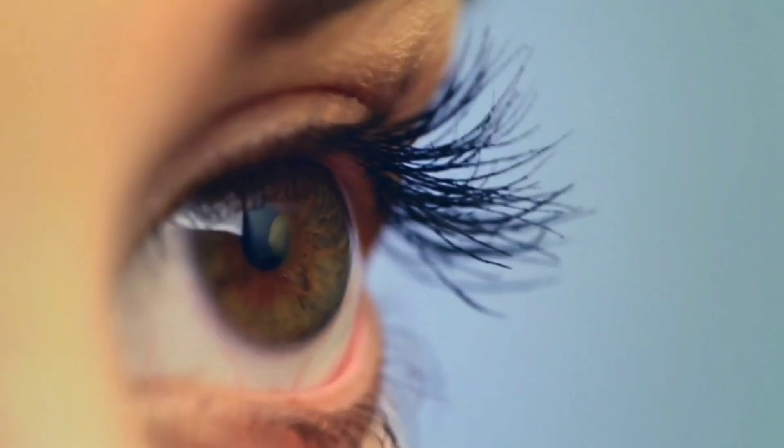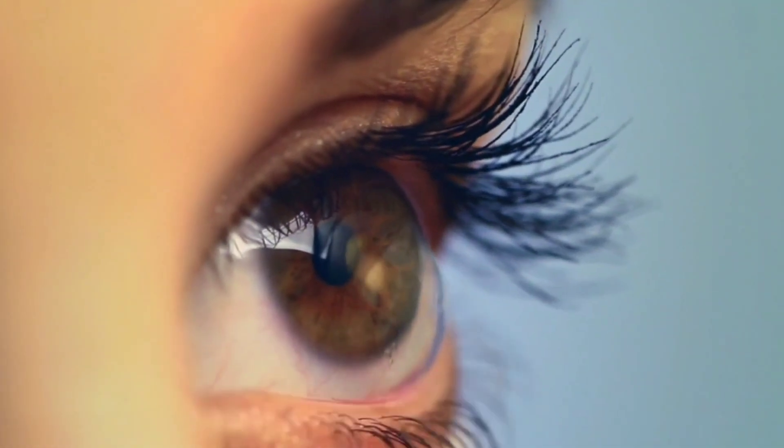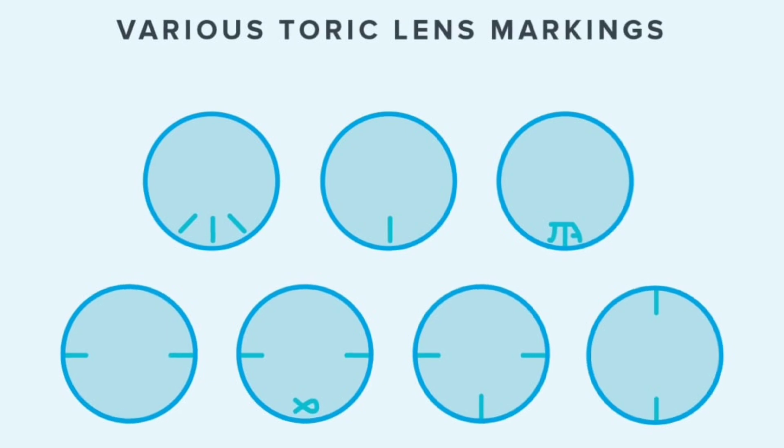The contacts for astigmatism are called toric lenses, and they're asymmetric like that lens I was just holding up. They often have a marking showing you which part should be on the bottom of your eye. But if you just put them in, they should settle to the right place over time if you just keep blinking because they're usually made heavier on the very bottom of the lens, so it just naturally settles that way because of gravity.